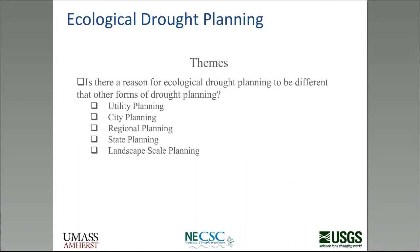My basic theme is to ask: is there a strong reason for why ecological drought planning should be different than other forms of drought planning? Drought planning varies from utility-level planning — whether it's a power utility or water supply utility — to city planning. Almost all major cities in the U.S. have drought plans, to regional planning such as around Atlanta where multiple water supplies coordinate, to state plans, to continental or landscape scale planning.